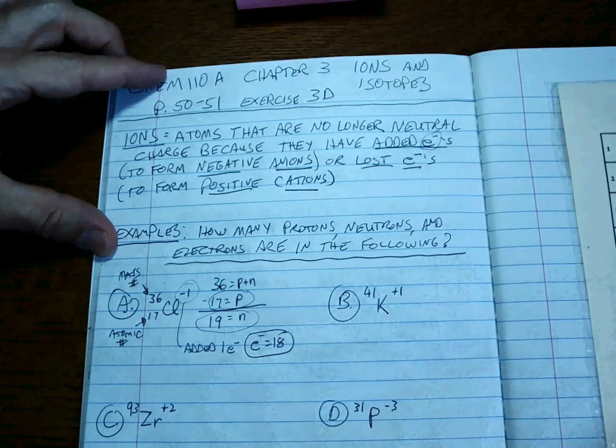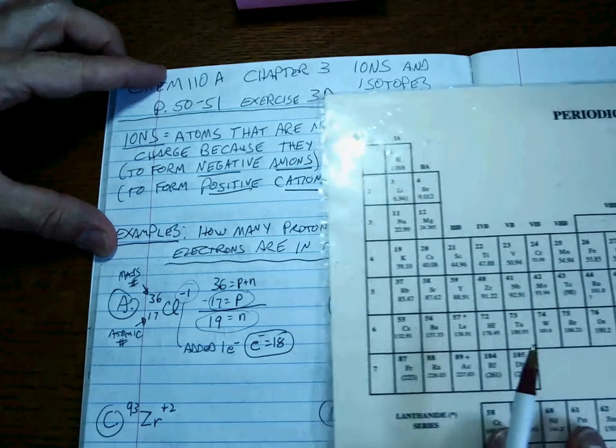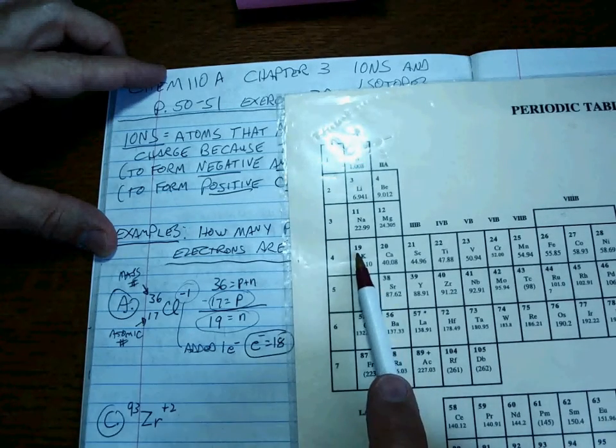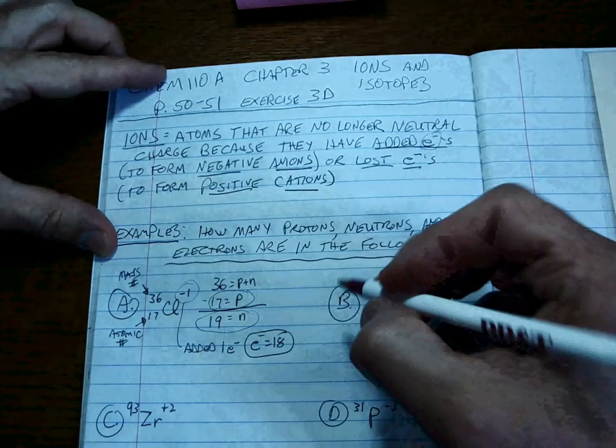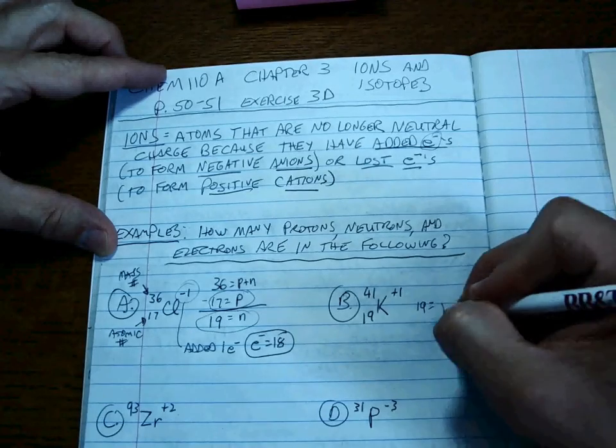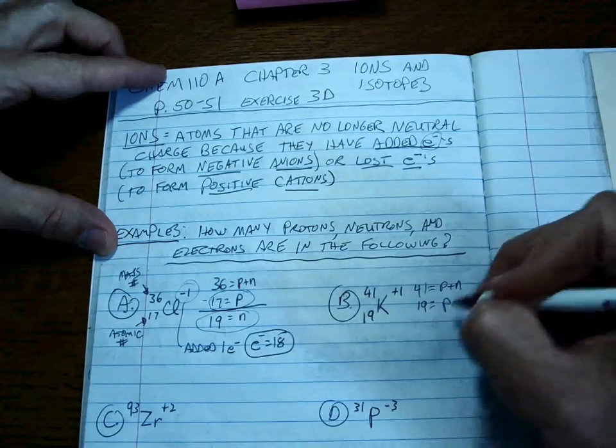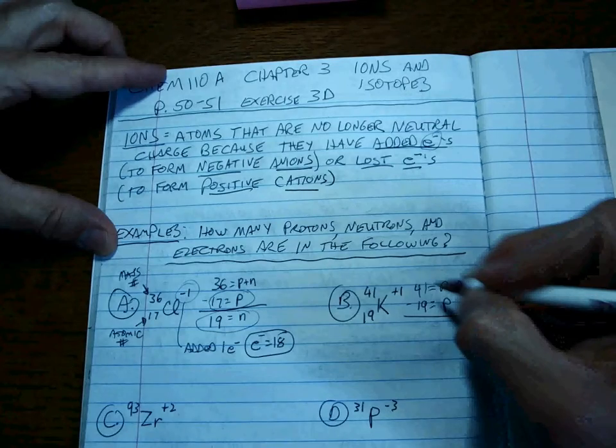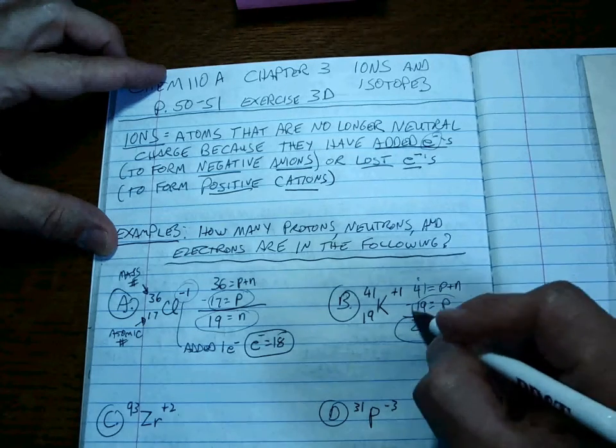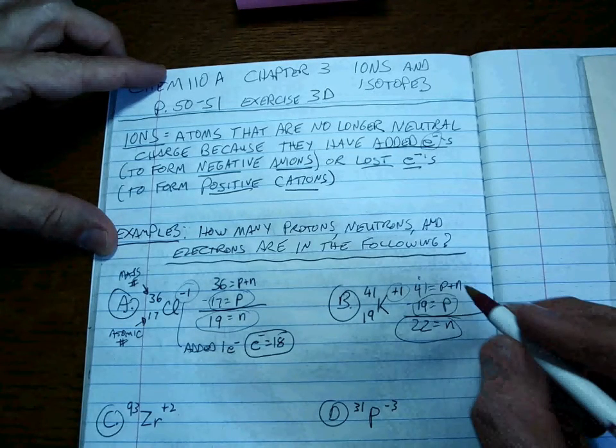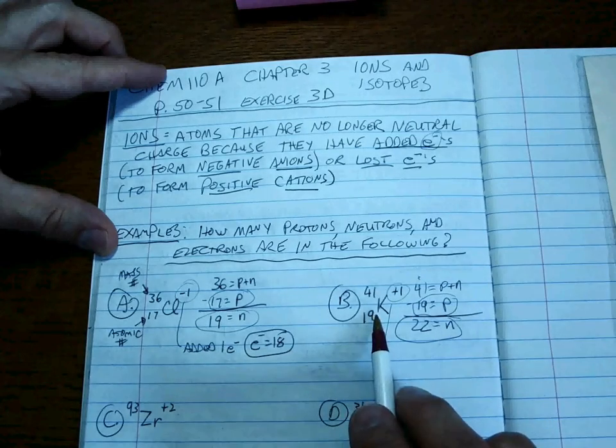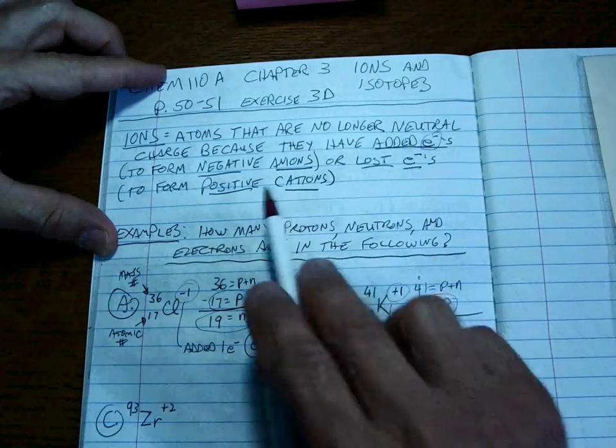That's the mass number. K, with the handy-dandy periodic table that you should always have at the ready, is right here, which means that's the atomic number. So 19 is the number of protons. 41 is protons plus neutrons. Subtracting the two means 22 neutrons and 19 protons. So what does the plus one mean?